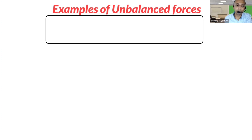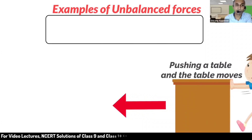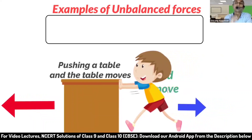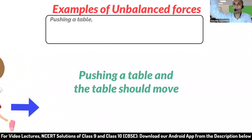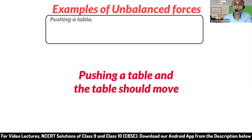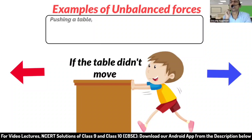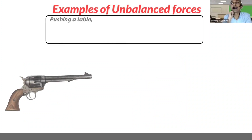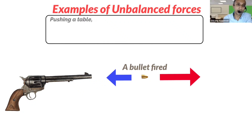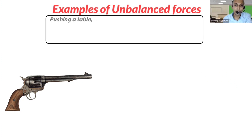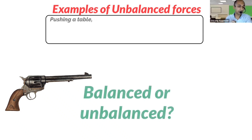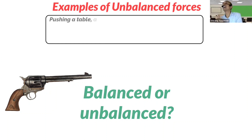Now, examples of unbalanced forces. For example, pushing a table and the table moves — that is unbalanced. If the table didn't move, it would be balanced. Another example: a bullet fired — that is an example of unbalanced forces.